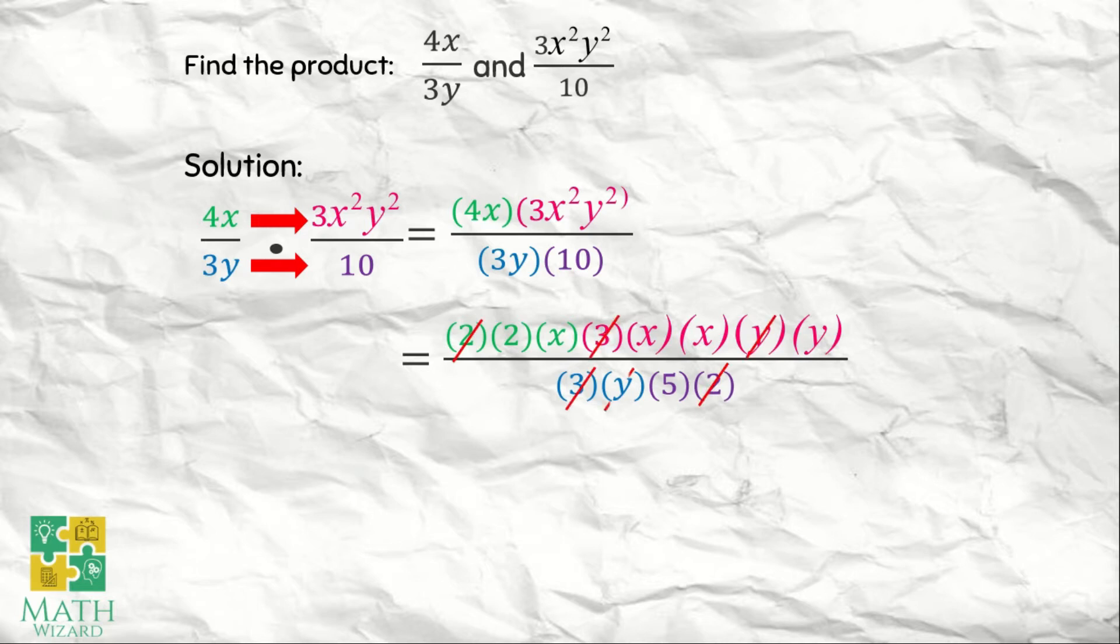Since there are no more common terms, we need to write the remaining terms. So these are 2 times x times x times x times y over 5. Simplifying this one, this becomes 2x cubed y over 5. Therefore, the final answer is 2x cubed y over 5. We just multiply the numerator to the numerator and the denominator to the denominator.